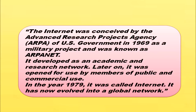How did the internet come into existence? Internet was conceived by the Advanced Research Projects Agency of the United States Government in 1969 as a military project and was known as ARPANET. It developed as an academic and research network. Later on, it was opened to members of the public and for commercial use. In the year 1979, it was called Internet, and it has now evolved into a global network.